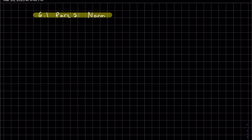So this is part 2 of 6.1. It's the norm of a vector. The norm of a vector is just the magnitude or the length of the vector.